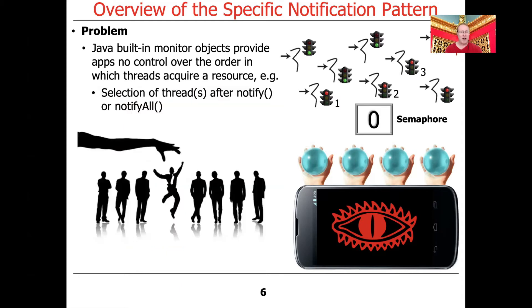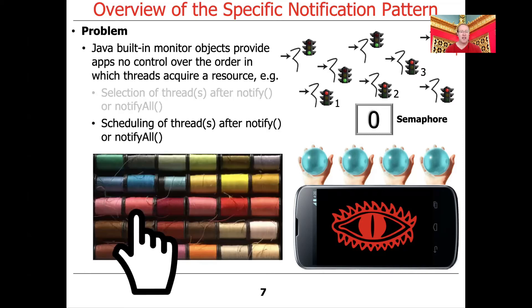This problem arises in two ways. First, you have no control over the selection of which thread or threads will run after notify or notify all. And you also have no control over the scheduling of the threads that run after notify or notify all.